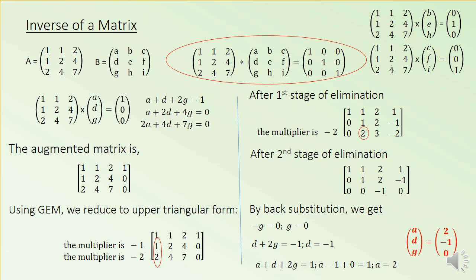For the first column, A times [a, d, g] equals [1, 0, 0] gives three simultaneous linear equations with unknowns a, d, g. We write the augmented matrix as [1, 1, 2 | 1; 1, 2, 4 | 0; 2, 4, 7 | 0]. Once the augmented matrix is constructed, we apply the Gauss elimination procedure.